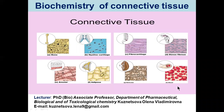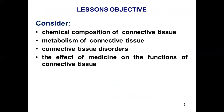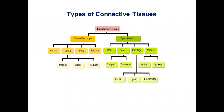This lecture is on the Chemistry of Connective Tissue. We will consider the chemical composition of connective tissue, its metabolites, connective tissue disorders, and the effect of medicine on connective tissue function. Connective tissue plays a dynamic role in the development, growth, differentiation, and homeostasis of other tissue types.